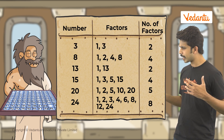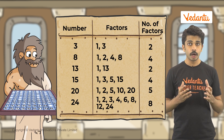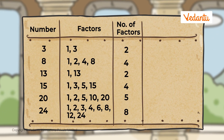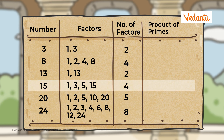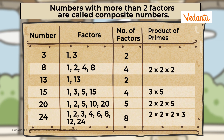So, numbers like 8, 15, 20, and 24 have more than a couple of factors. These numbers can be written as a product of prime numbers. For example, 15 can be written as a multiple of prime numbers 3 and 5. Such numbers are called composite numbers. Composite numbers are numbers with more than two factors.